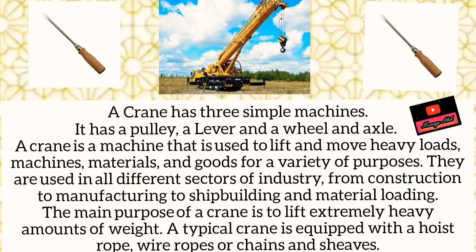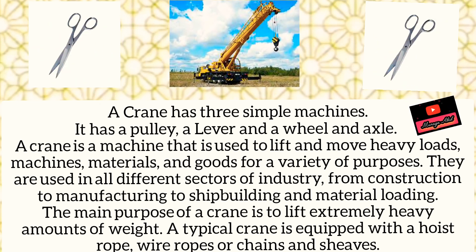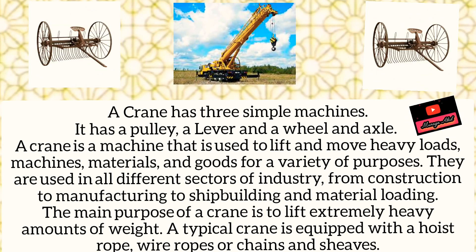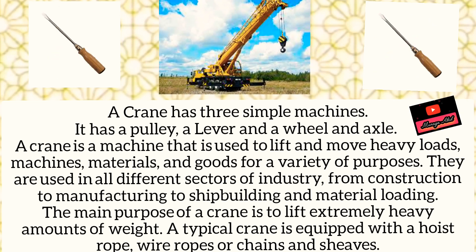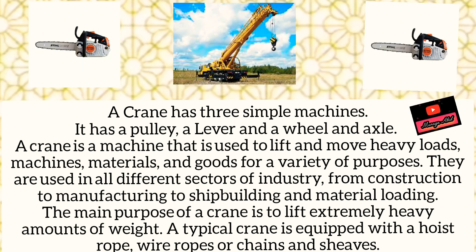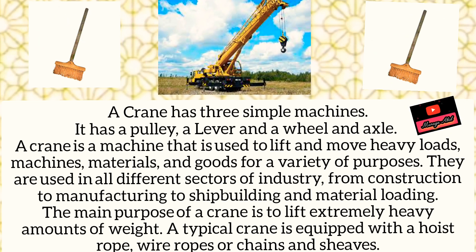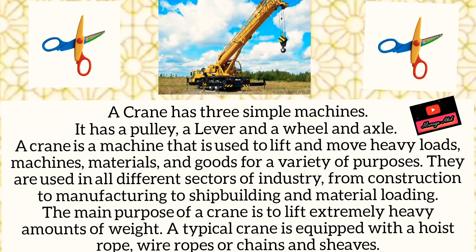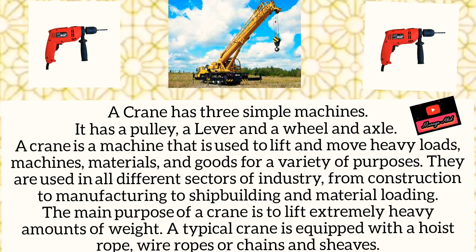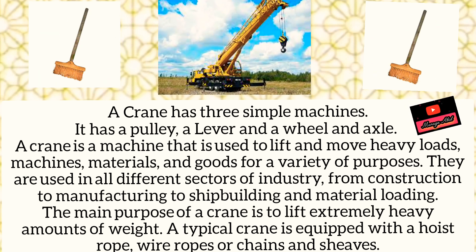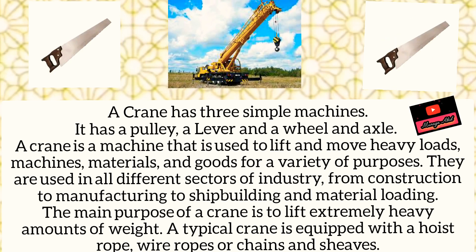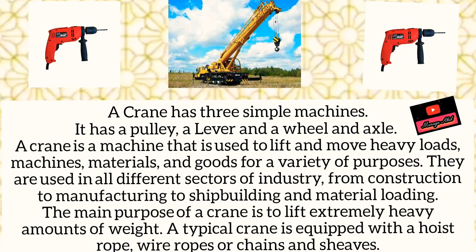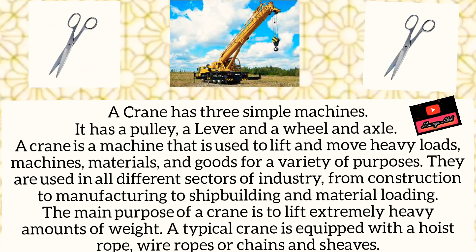First we will study about cranes. A crane is not a simple machine — it's a compound machine because it uses three simple machines: number one is pulley, number two is lever, and number three is a wheel and axle. A crane is a machine that is used to lift and move heavy loads, materials, and goods for a variety of purposes.